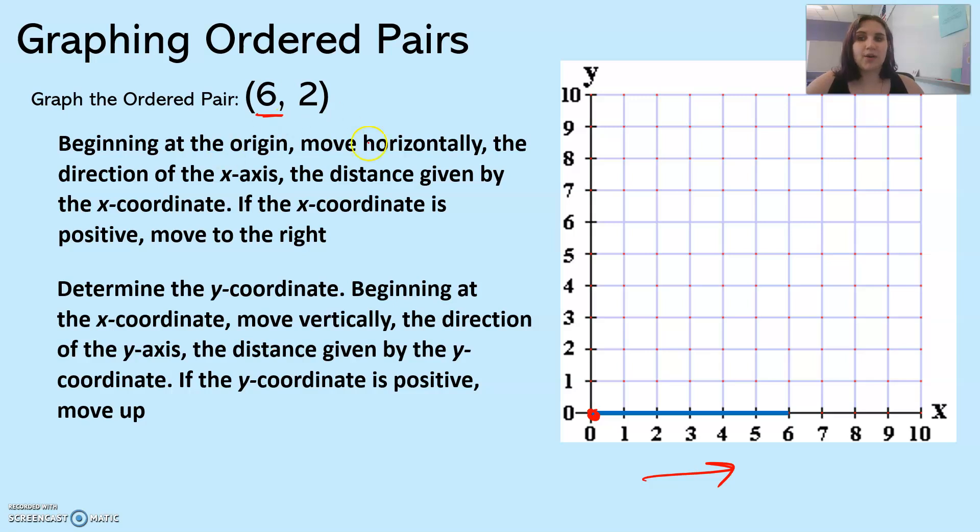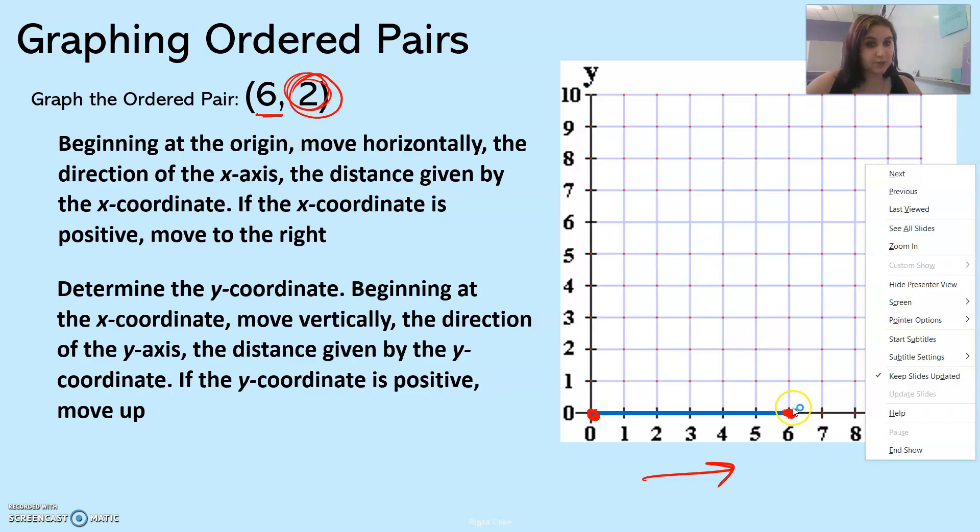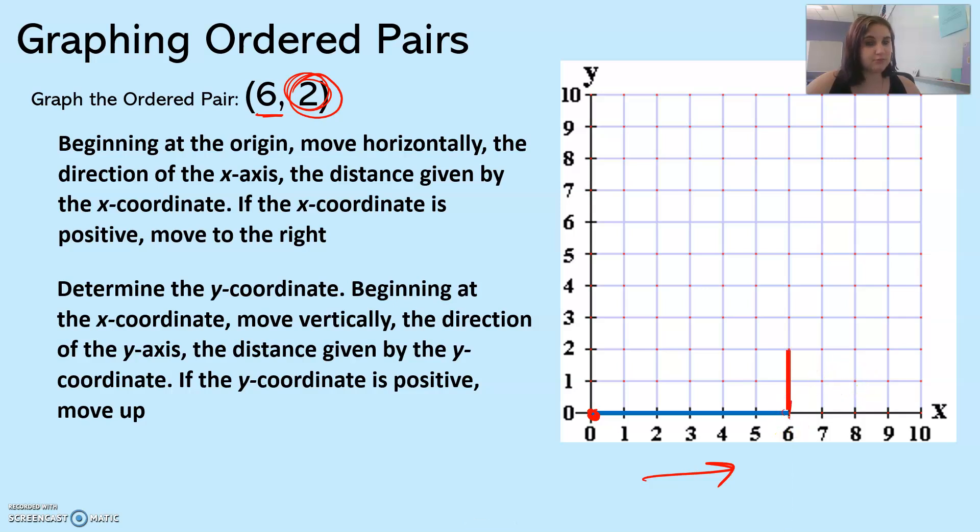Then determine the y-coordinate, which here is two. Beginning at the x-coordinate, we're going to begin where we left off here at six. Move vertically the direction of the y-axis. We're going to go up, and because it's positive, positive goes up. We're going to go up two. Then draw and label where you end up.